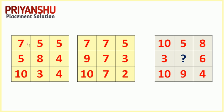In this question, the logic is nothing but addition of every row. If you add every row: 7 plus 10 plus 5 — that's 17. Again, 5 plus 8 plus 4 is 17, and 10 plus 3 plus 4 is also 17.